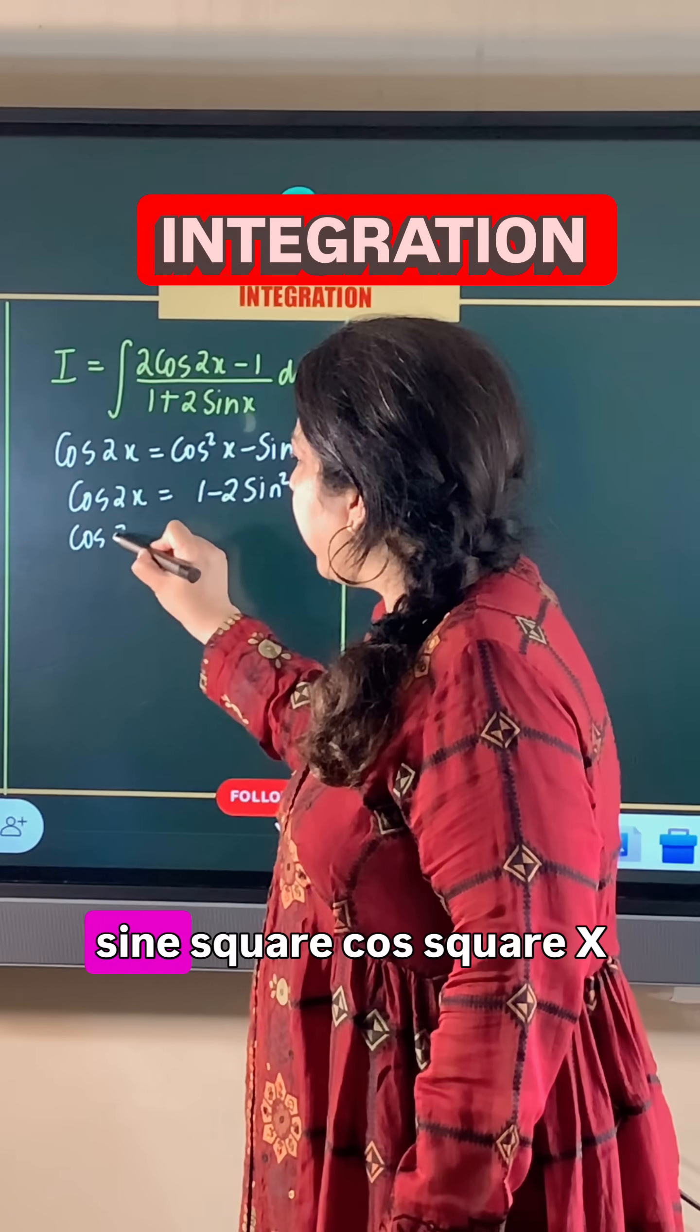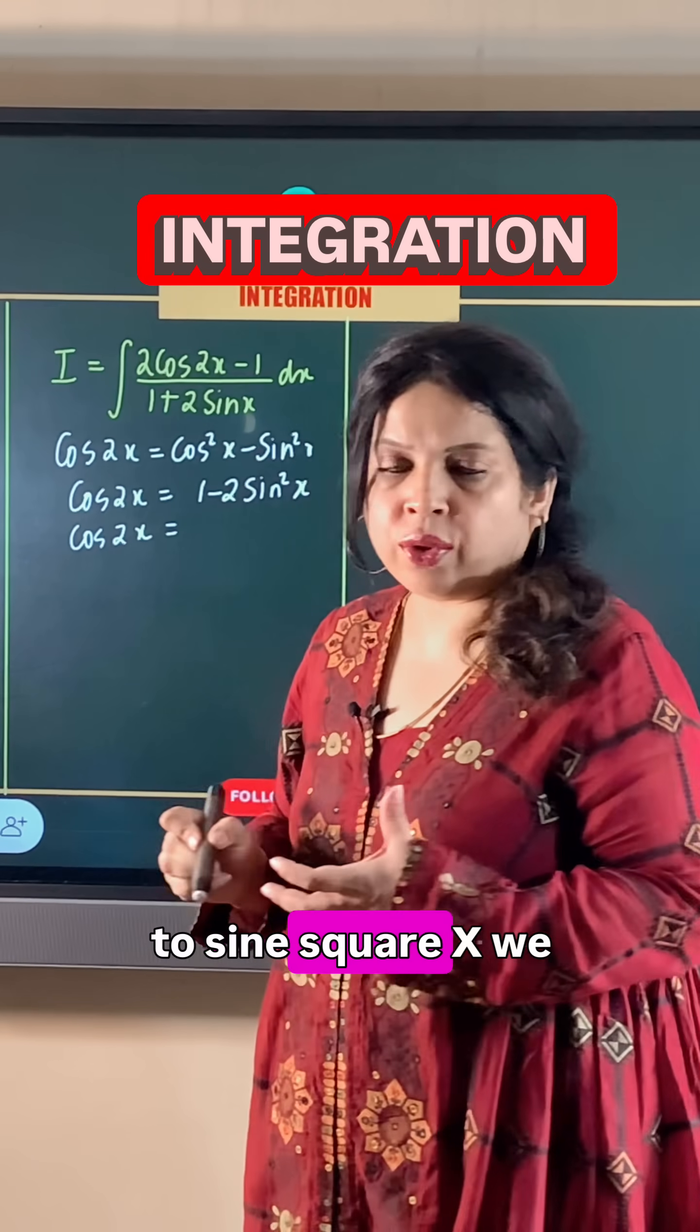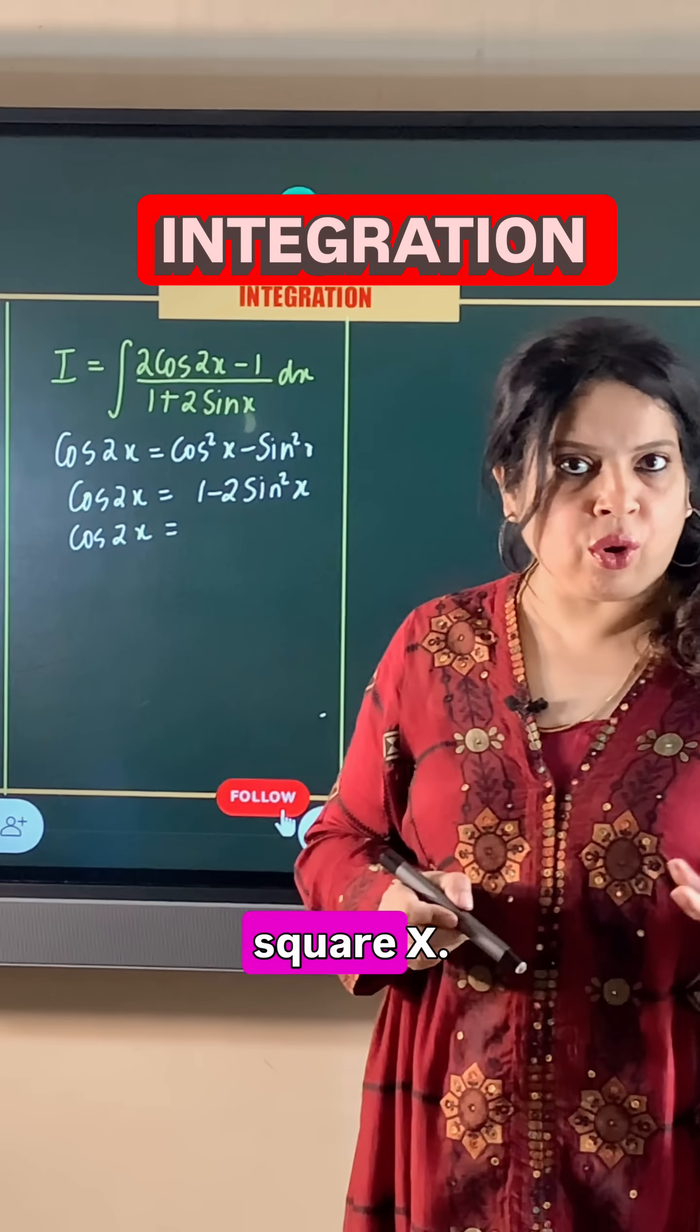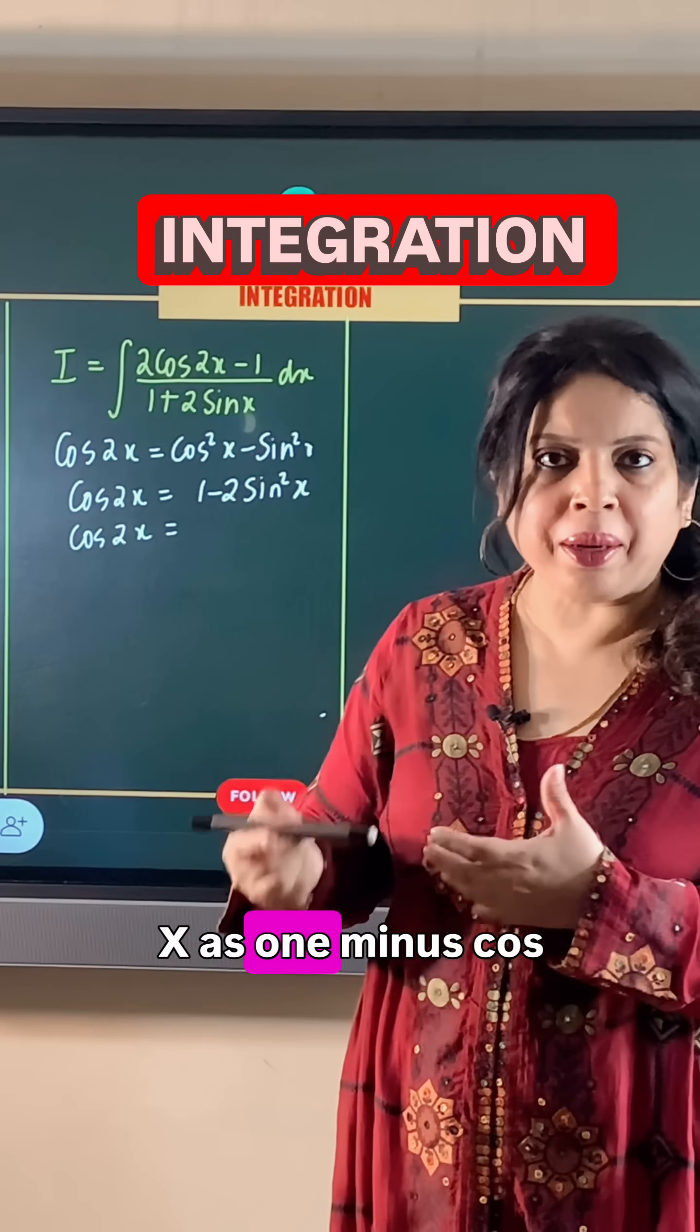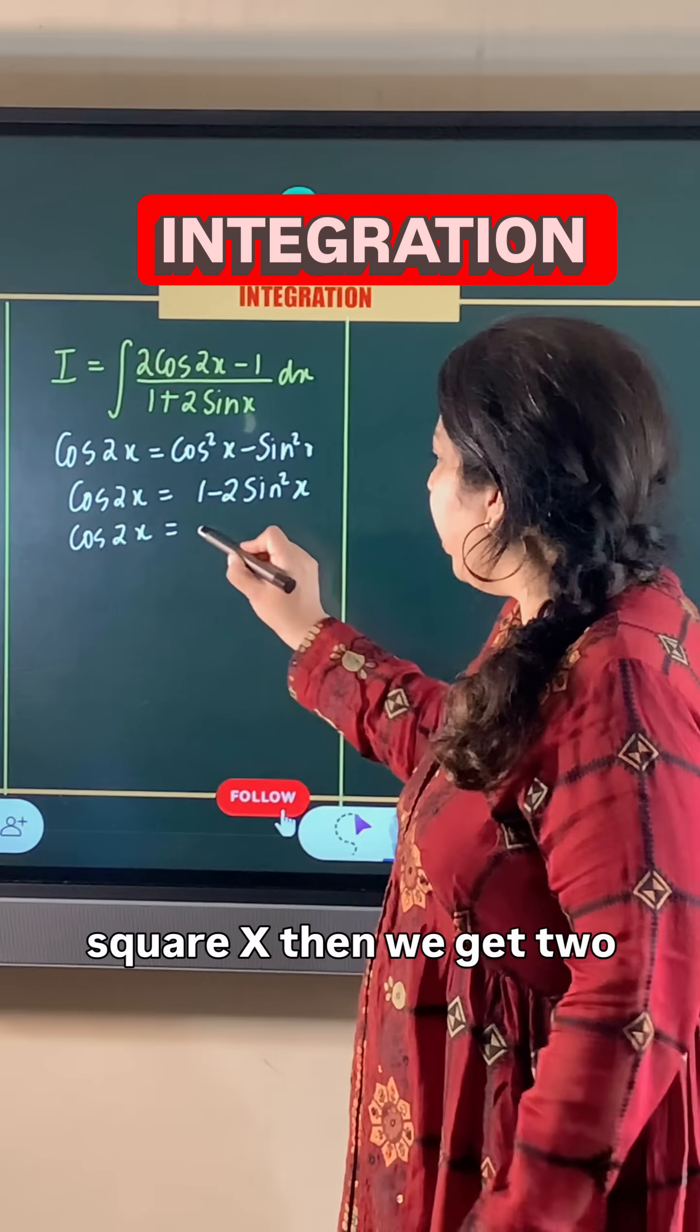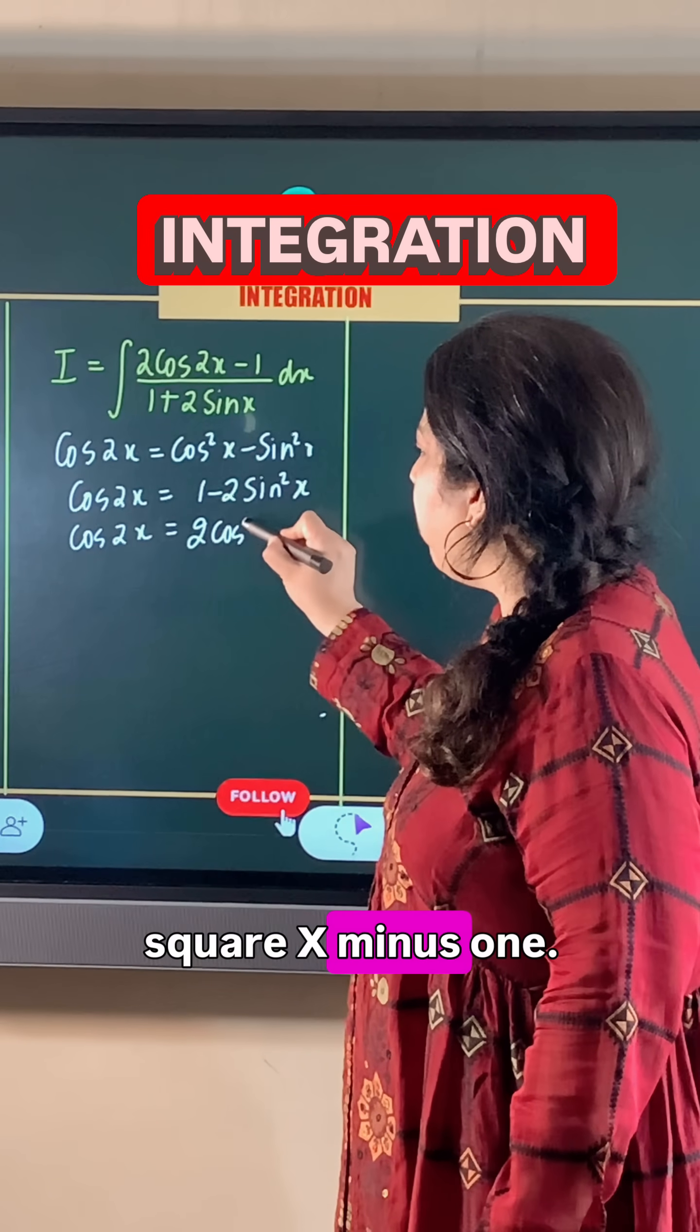If instead we change sin²x to cos²x, we can write sin²x as 1 - cos²x, then we get 2cos²x - 1.